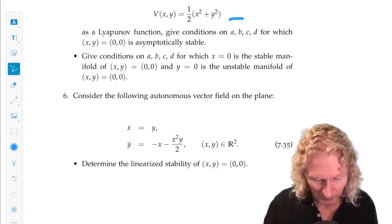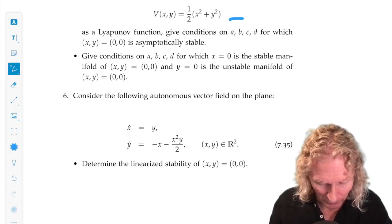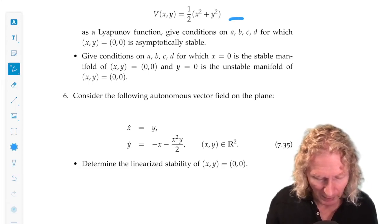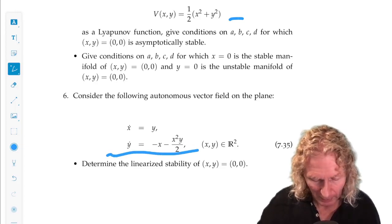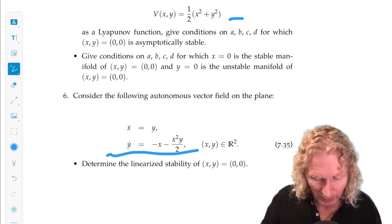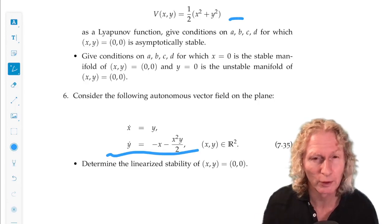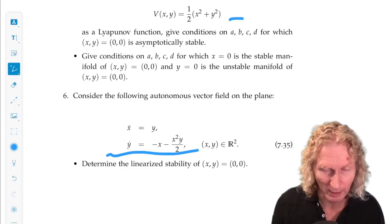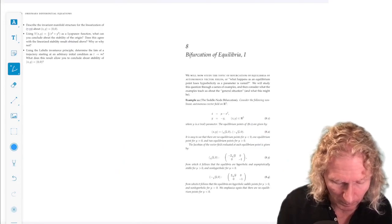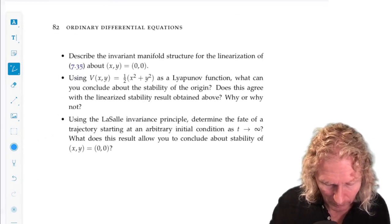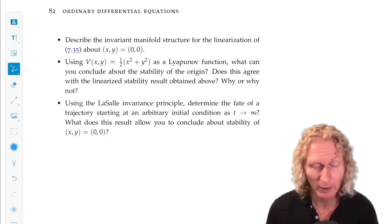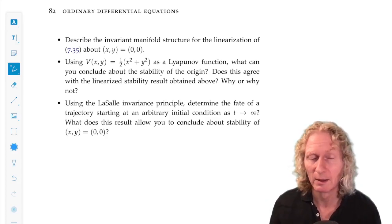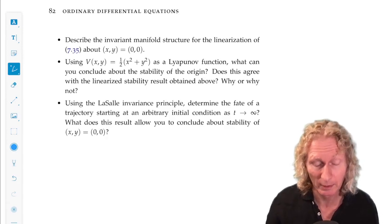Problem 6 is interesting. So, here's the vector field. I want you to determine linearized stability of the origin. Origin is a fixed point. That's pretty obvious. And then I want you to describe the invariant manifold structure for the linearization about the origin. Find the stable, unstable, center subspaces, whichever exists or do not exist.